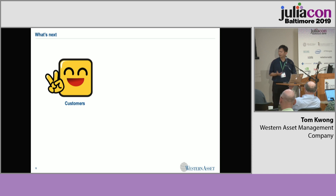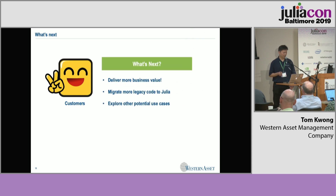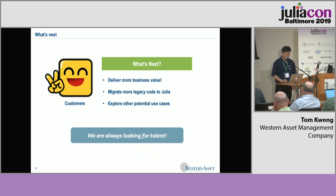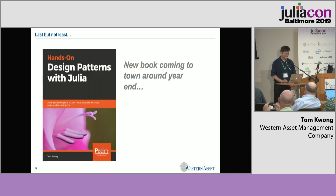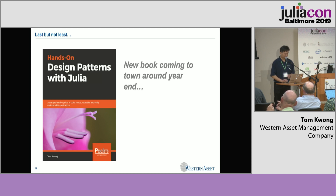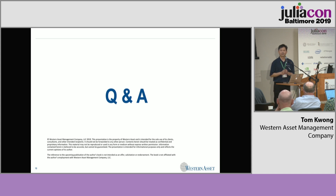At the end of the day, we have happy customers, and with happy customers we can do even more — such as delivering even more business value by coding more use cases or migrating existing legacy code to Julia, or exploring other potential use cases where Julia might be a fit. Western Asset is always looking for talents, so if you're interested, just give me a shout after the talk. Lastly, I'm writing a book right now called Hands-On Design Patterns with Julia. I'm trying to get it out by the end of the year, and I'd like to use this book to give back to the community, because a lot of the ideas in it actually came from you. That's the end of the talk — open for questions.